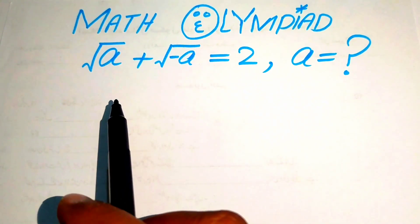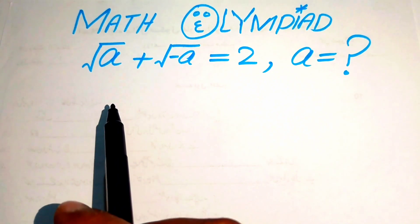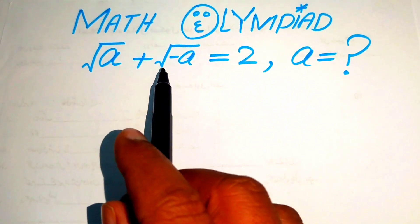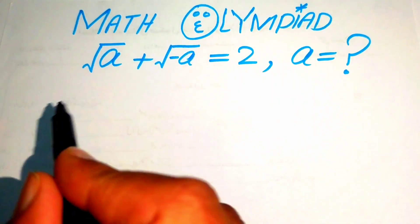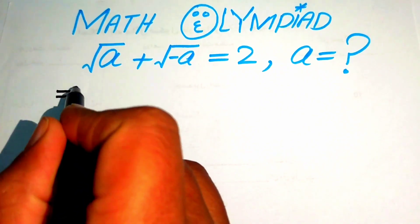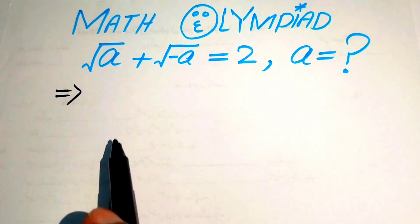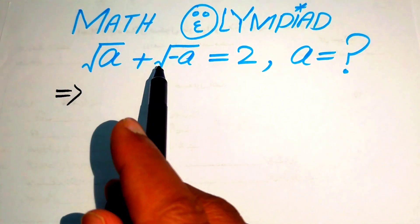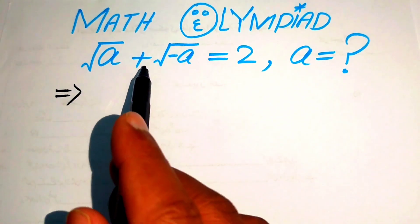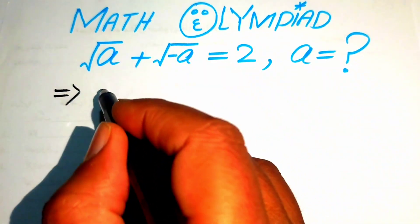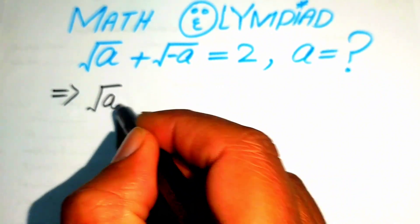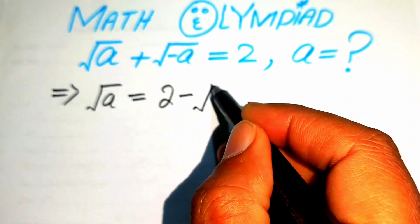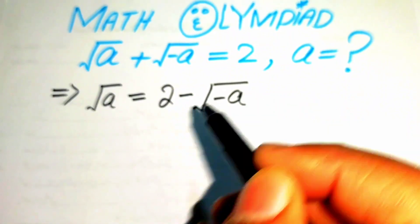Here we find the value of a. First, we move the square root of minus a to the right hand side. Our first target is to eliminate the square root on both terms, so we get square root of a equals 2 minus square root of minus a.